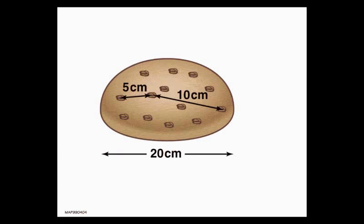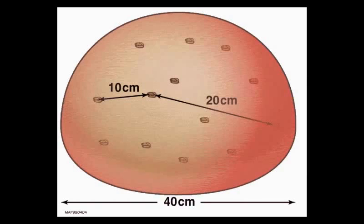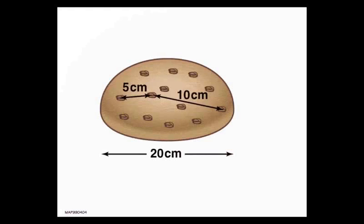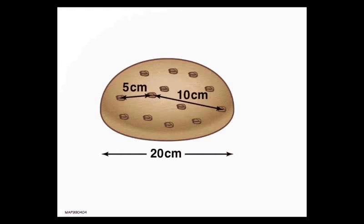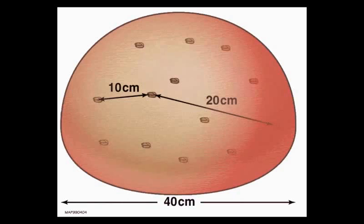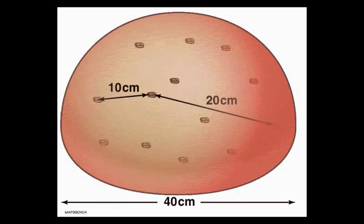If you want to imagine how our universe expands in 3D, the raisin bread analogy does the trick. Take a look at this animation. The raisins represent galaxies and the bread represents space. If the bread doubles in size, the distance between any pairs of raisins also doubles. The raisins stay roughly the same shape though, just like a galaxy.